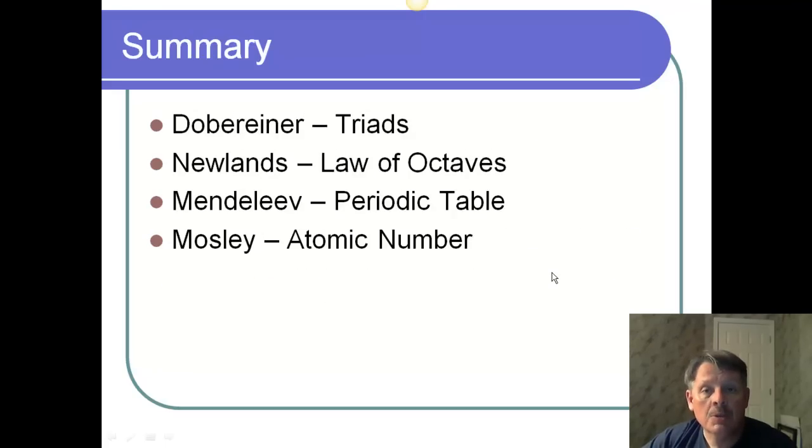So, in summary for this podcast, you need to know about Döbreiner, Newlands, Mendeleev, and Mosley, and that Döbreiner had the idea for triads. Newlands came up with a law of octaves of things repeating every eight elements. Mendeleev came up with a periodic table in 1869. Very, very huge, important concept. And then Mosley came up with the atomic number in the 1900s. That's it. Hope you've been taking notes. Go ahead and do the worksheet, and I'll see you in the next video. Have a good one. Bye.